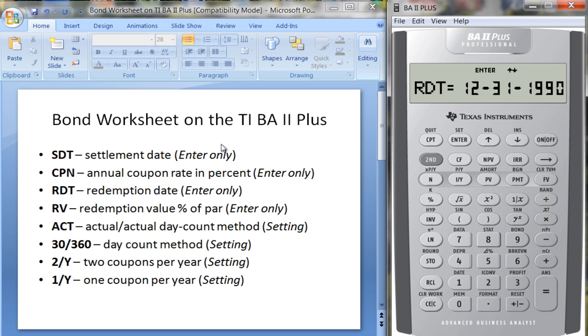You have the redemption date—this is when the bond is redeemed. You put it in the same way you put in the settlement date. Let's say this is going to mature on March 31st of 2020, so that would be 3.3120 enter. Then you put in the redemption value. This is a percentage of the par value—what you'll be receiving. A hundred means you're getting 100%, so if it's a $1,000 maturity bond you're going to get $1,000. If for some reason you're getting less or more, then you'll put in a different percentage.